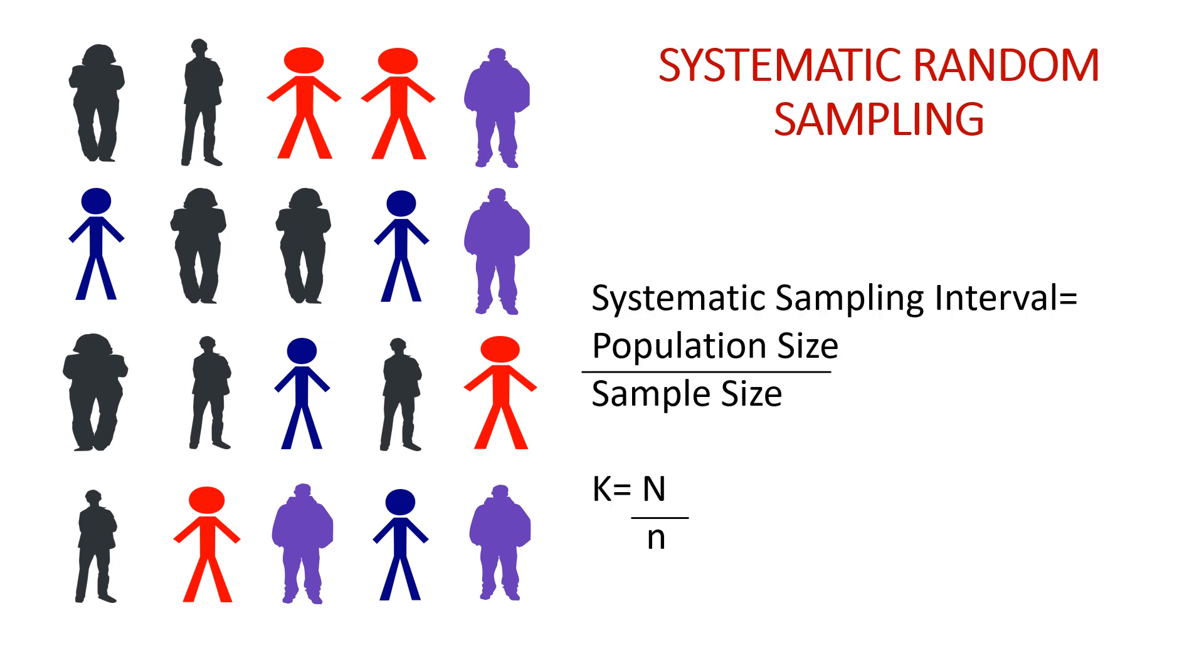For Systematic Random Sampling, we need to find a term K, which is the Systematic Sampling Interval. For that, we use the formula: Systematic Sampling Interval equals population size divided by sample size, which is capital N divided by small n.